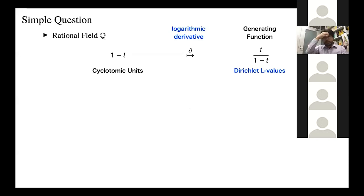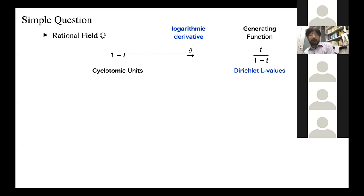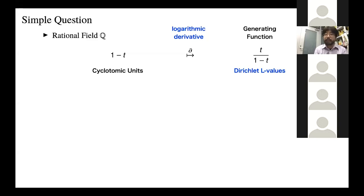The general story I want to talk about today concerns a very simple question. In the case of the rational field Q, there is this rational function 1 minus t, which is related to cyclotomic units. If you take the logarithmic derivative, you get t over 1 minus t, which is known to be related to Dirichlet L-values. So there's one very good generating function in this case.